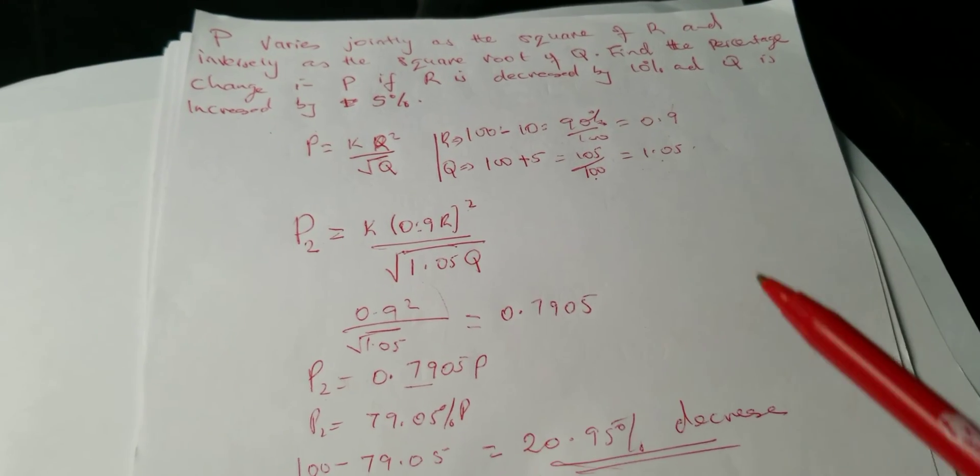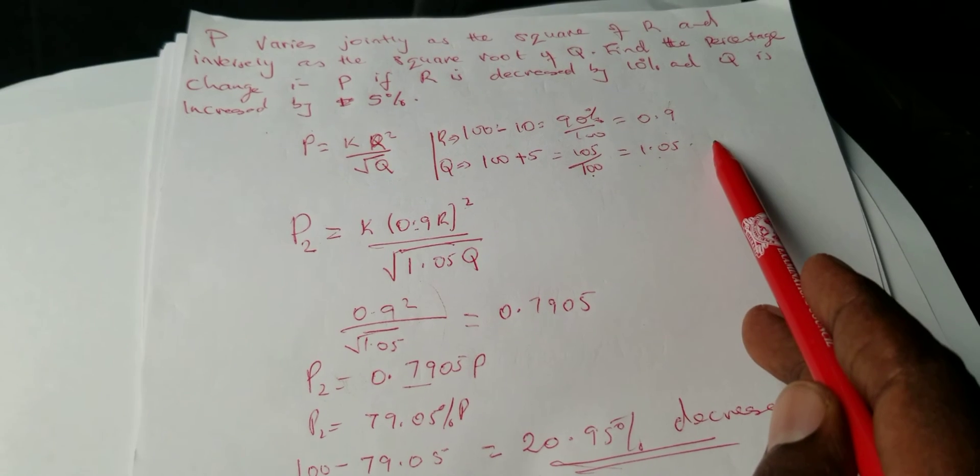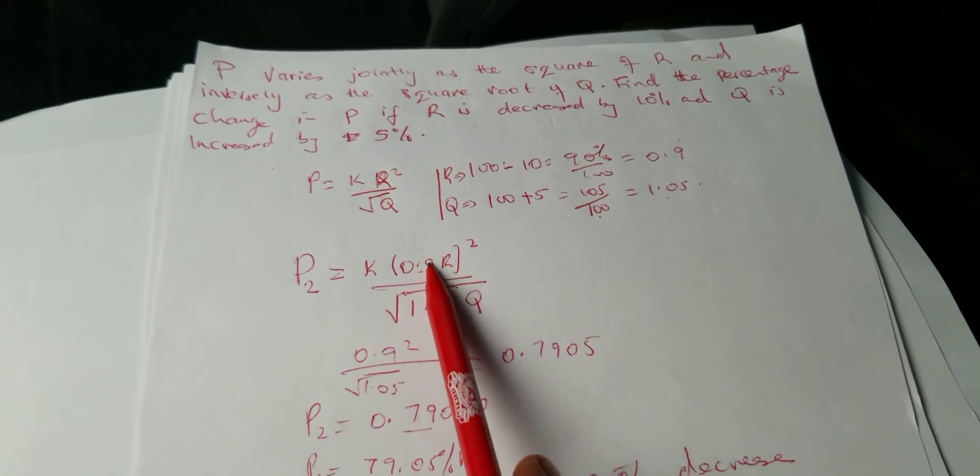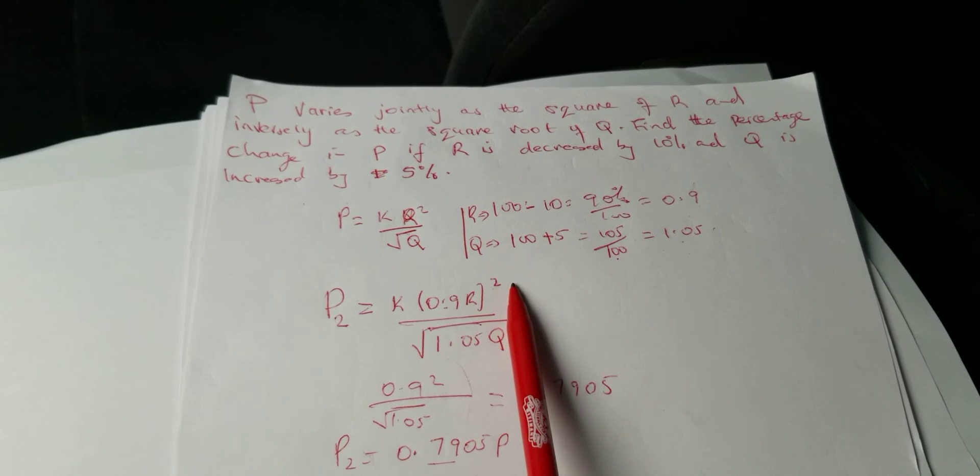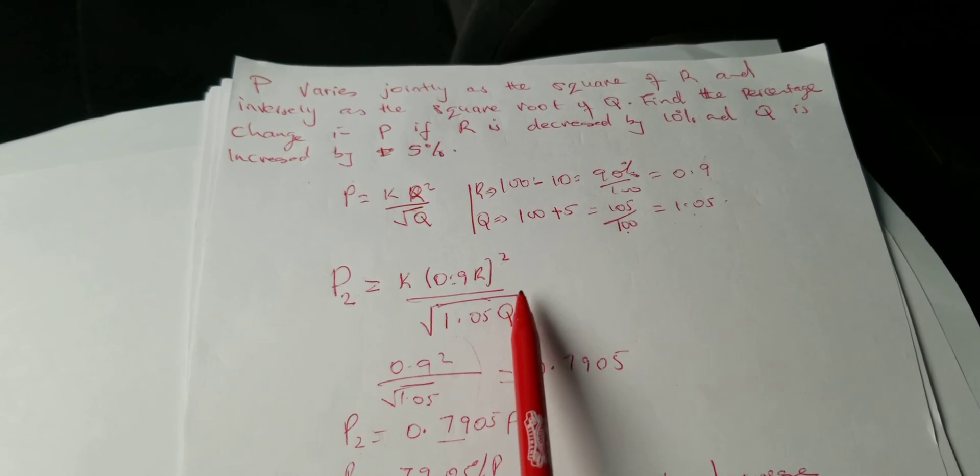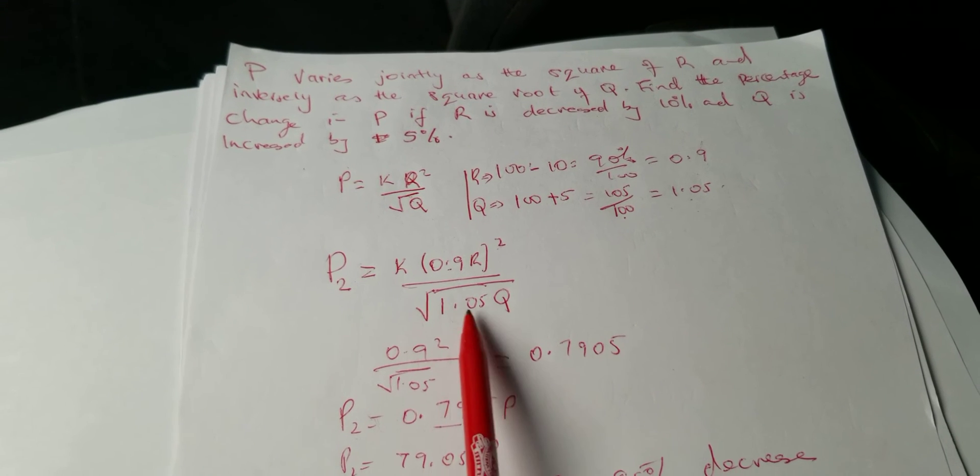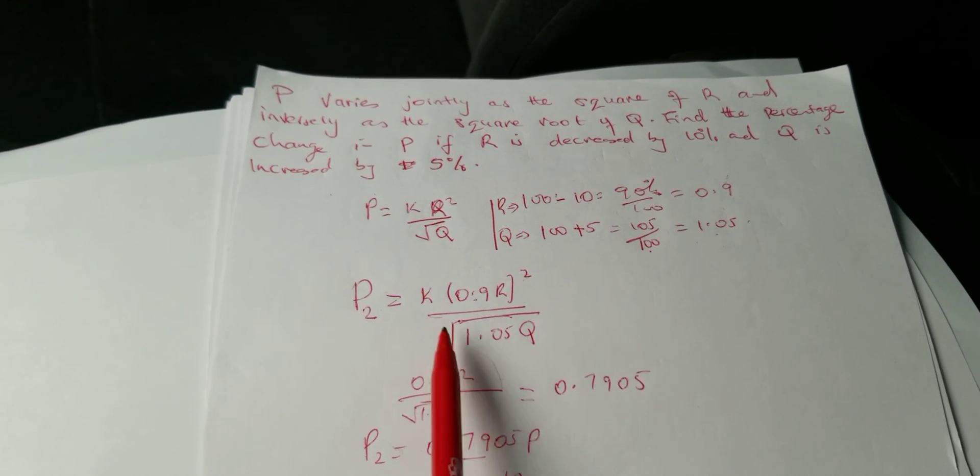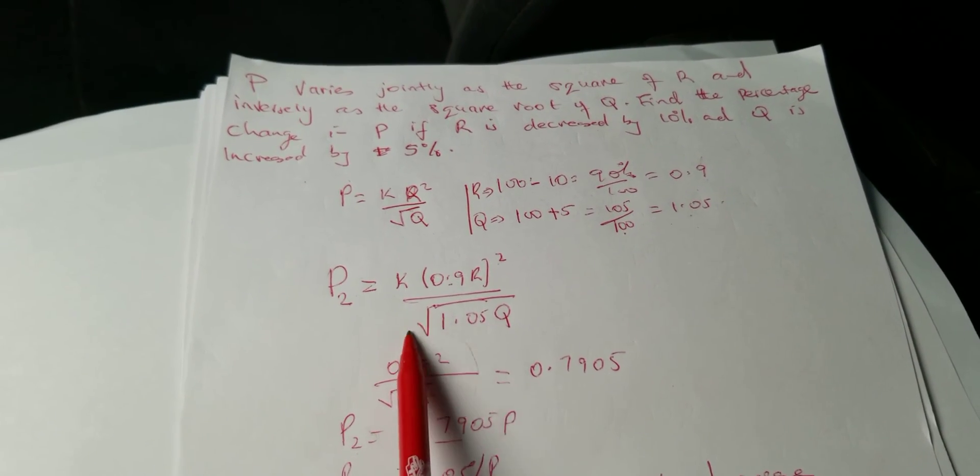And when you are bringing in the numbers, don't forget: if R was squared, even that change will also be squared. If Q is under square root, even the change will be under square root. So don't take it out of the square root; it will be part of it.